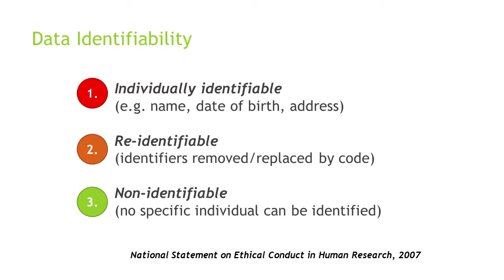There are three levels of data identifiability. The first is individually identifiable, where the data still contains names or dates of birth. The second is re-identifiable, where in theory all the identifiers have been stripped out or replaced by random codes, but there still remain extra attributes in the dataset that could potentially be linked to other datasets to re-identify individuals.